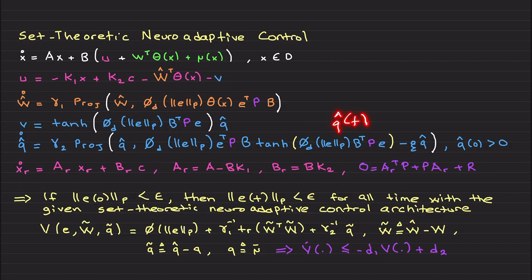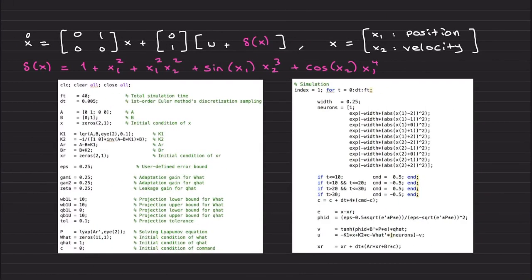The lower bound for these guys, since this guy, let me be more precise, q hat needs to always stay positive, non-negative definite. So projection bound for the lower bound of the projection operator should be 0. Upper bound is some number. I used 10 here and 0. For w hat projection operators, I just use 10 and 10. The lower bound is actually minus 10. In the code, the code automatically understands it says minus 10. Some technical details. I choose gamma 1, gamma 2 and zeta, the leakage term, to be 0.25, 0.25, 0.25.